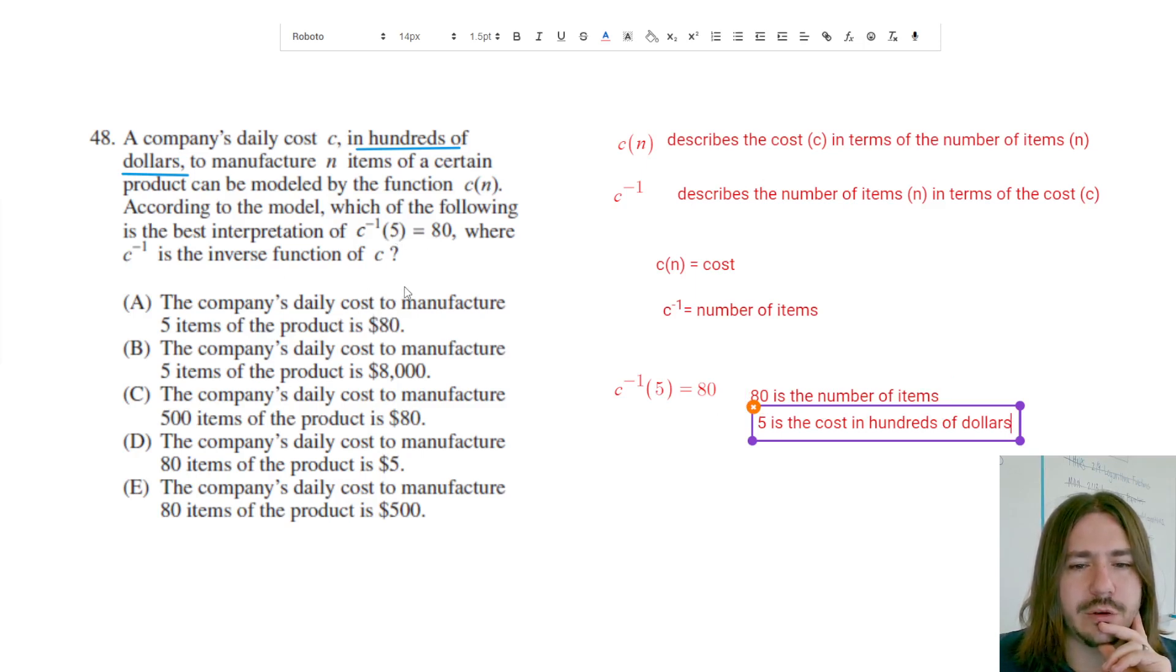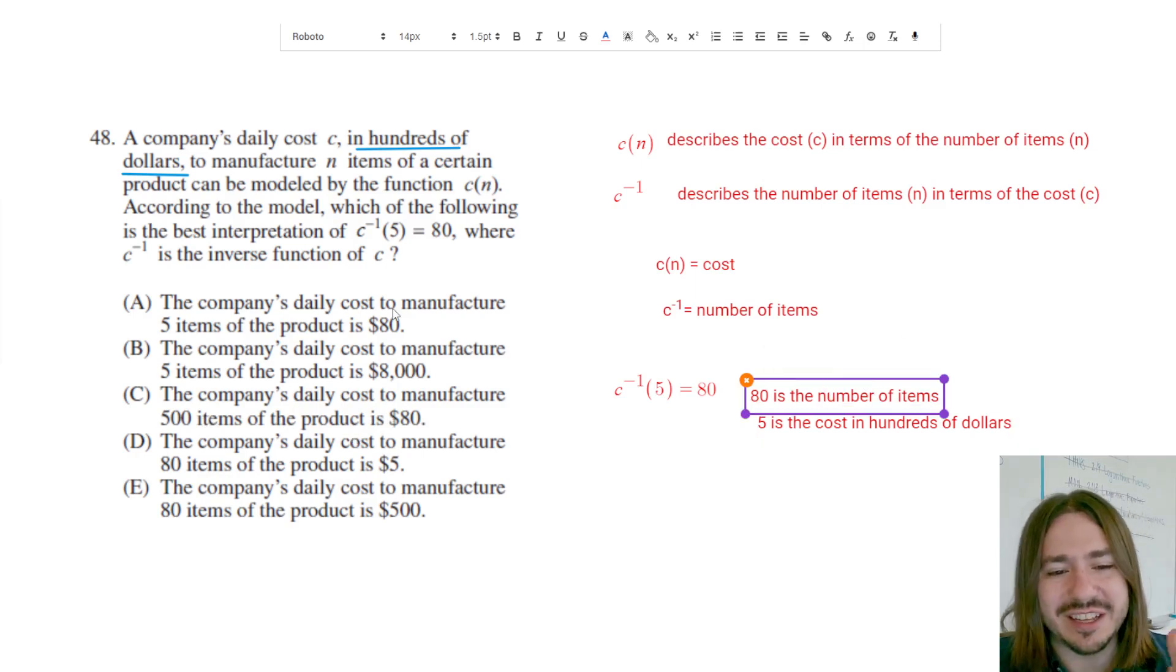If this was C of 5 equals 80, this would almost be correct except the number should be hundreds of dollars. B says the company's—B is the same thing as A except they do take the hundreds of dollars into account, but again they've got it backwards. C says the daily cost to manufacture 500 items—no, this one's just totally wrong.